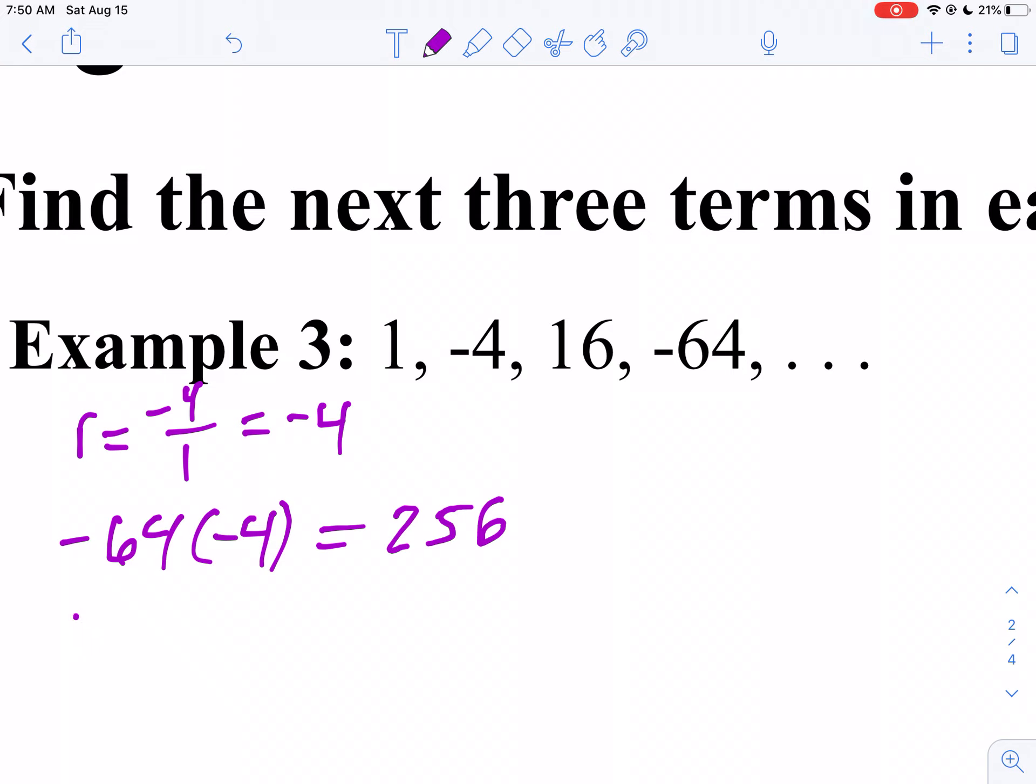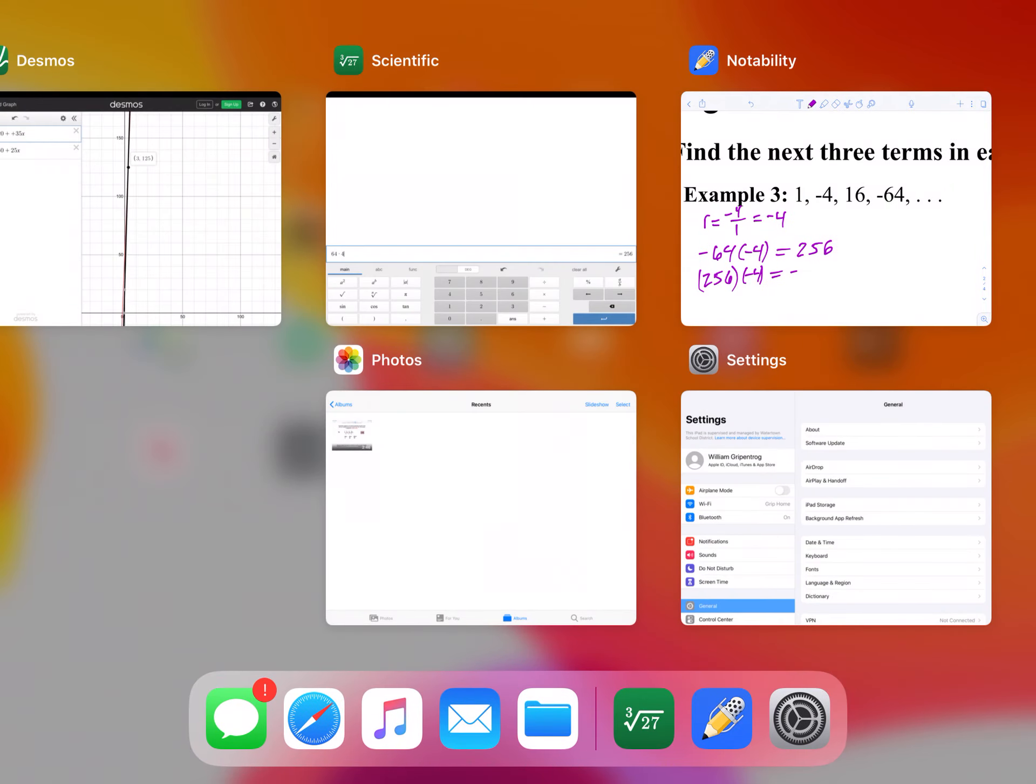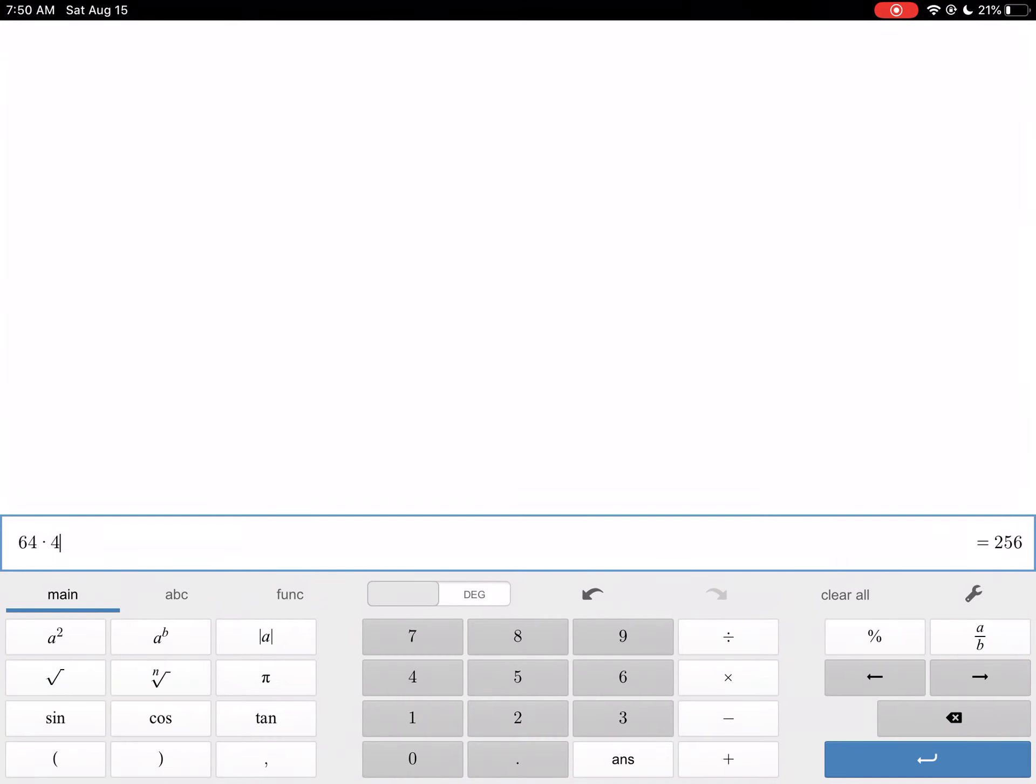Then I'll take 256 times negative four. My answer will be negative, because a positive times a negative is a negative. So then I'm going to multiply that answer times negative four, and we get negative 1024.